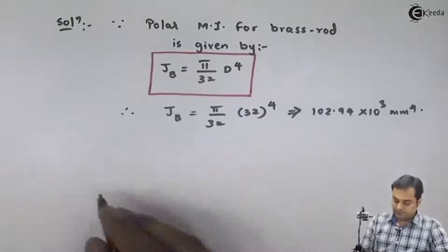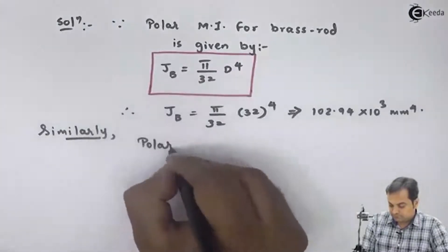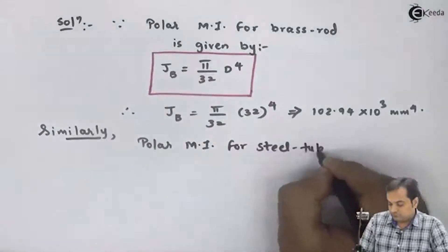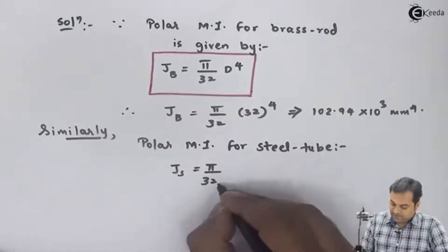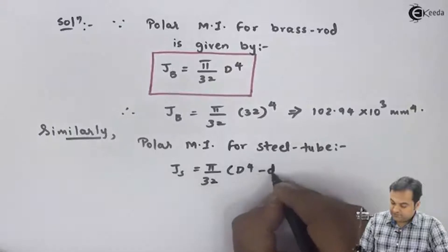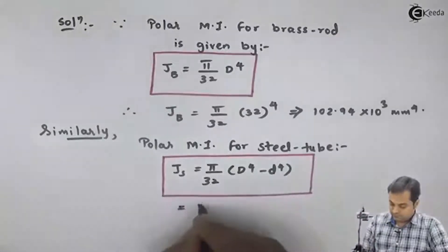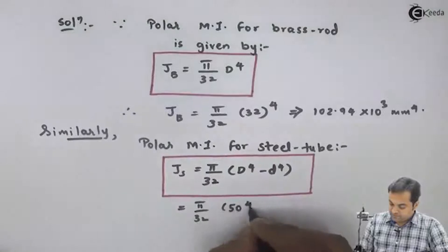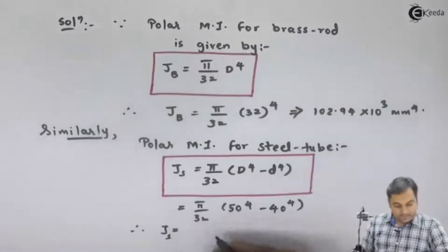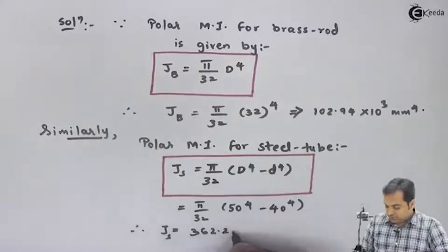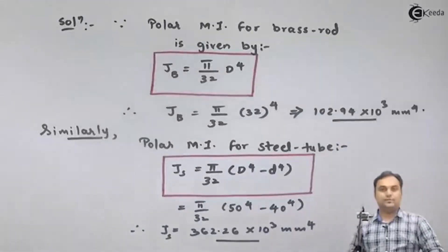Similarly, I will calculate the polar moment of inertia for the steel tube. Since steel is hollow: J_s = π/32 × (D⁴ − d⁴), where external diameter D = 50 mm and internal diameter d = 40 mm. Therefore J_s = 362.26 × 10³ mm⁴. So we now have J values for both brass and steel.